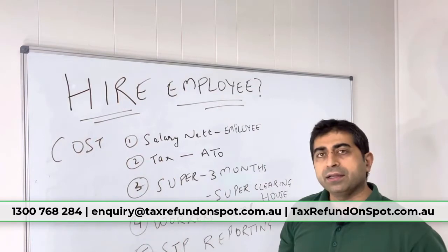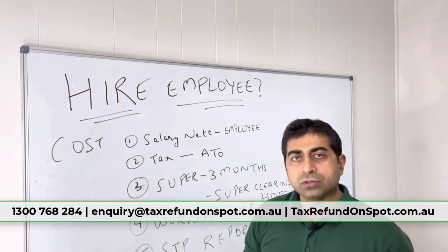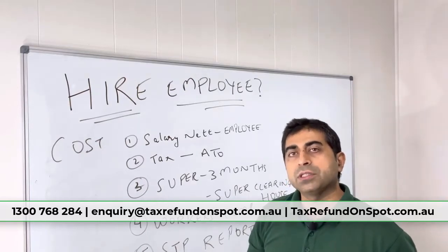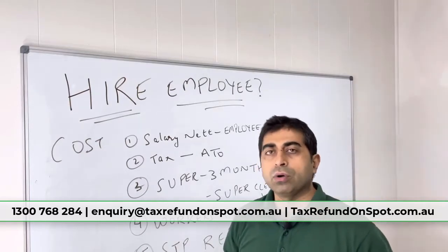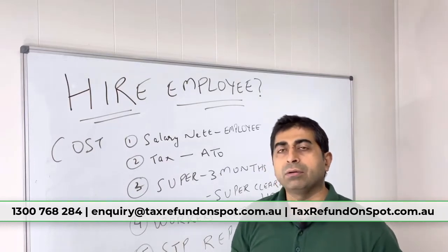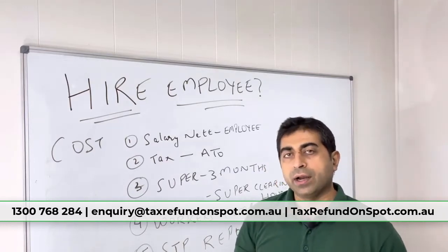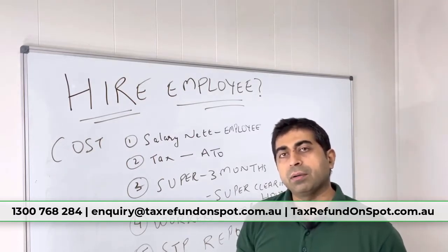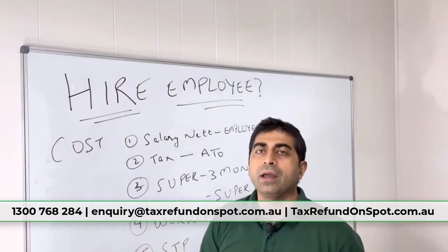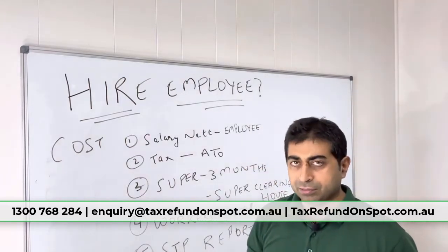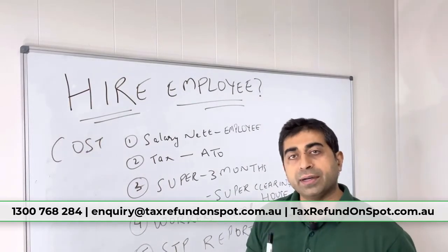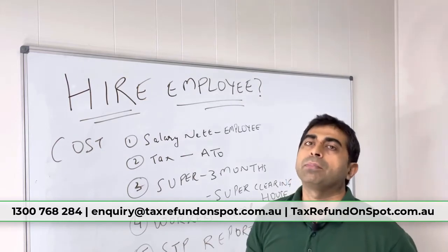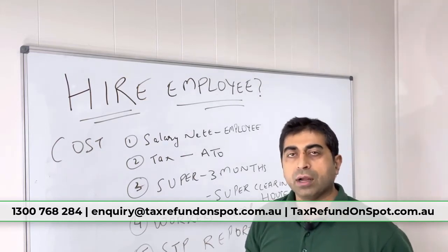Net salary means after the tax. So let's say if the gross salary is $1,000 a week, you need to find out how much tax is taken out. Go to Google and search the tax withheld calculator on ATO. Put in the gross amount and select weekly or fortnightly — whatever frequency you're paying — and you'll find out how much tax to deduct. Then pay the net salary to the employee's bank account every week, fortnight, or month.